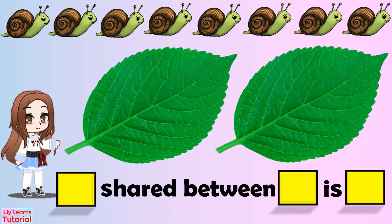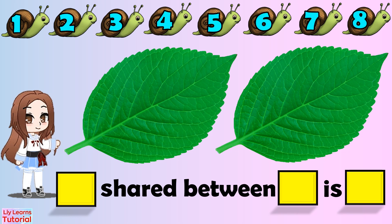Let's move on and complete the sharing sentence below. First, count the number of snails. I'm going to go one, two, three, four, five, six, seven, eight. There are eight snails to be shared, so we write eight in the first box.